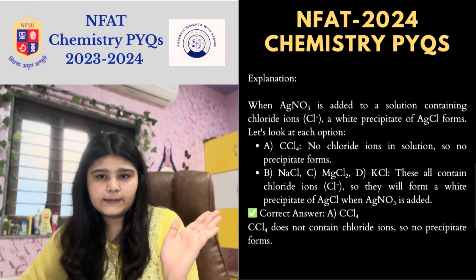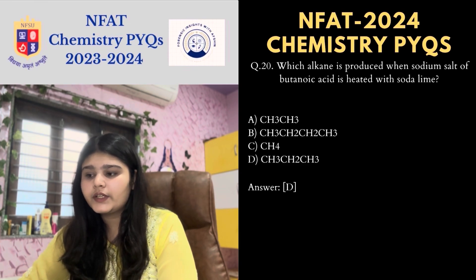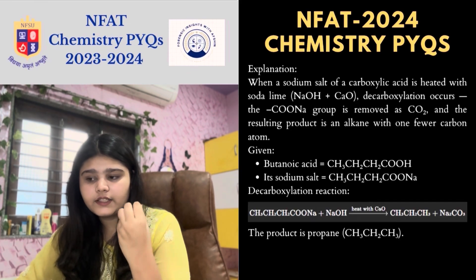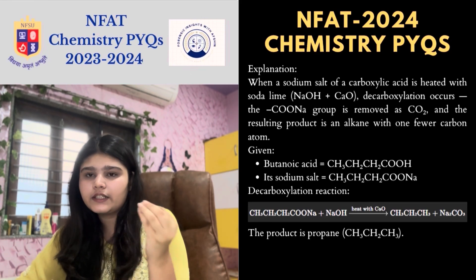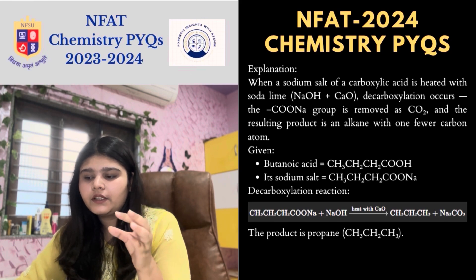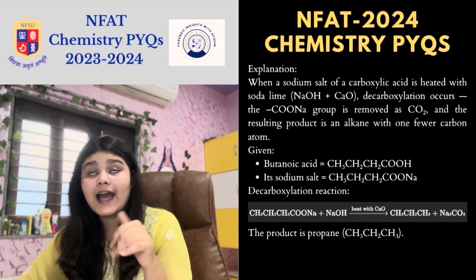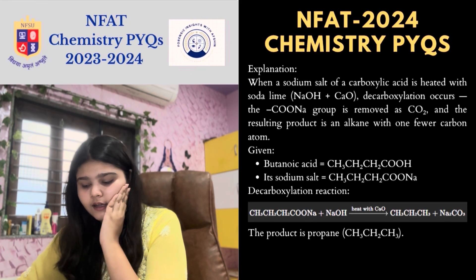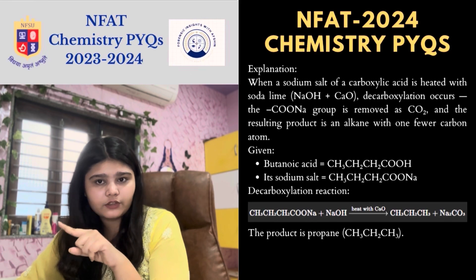Next MCQ: which alkane is produced when the sodium salt of butanoic acid is heated with soda lime? This is a decarboxylation reaction. When the sodium salt of butanoic acid is reacted with CaO and heated, it gives propane along with CO₂. So option D is the correct answer.